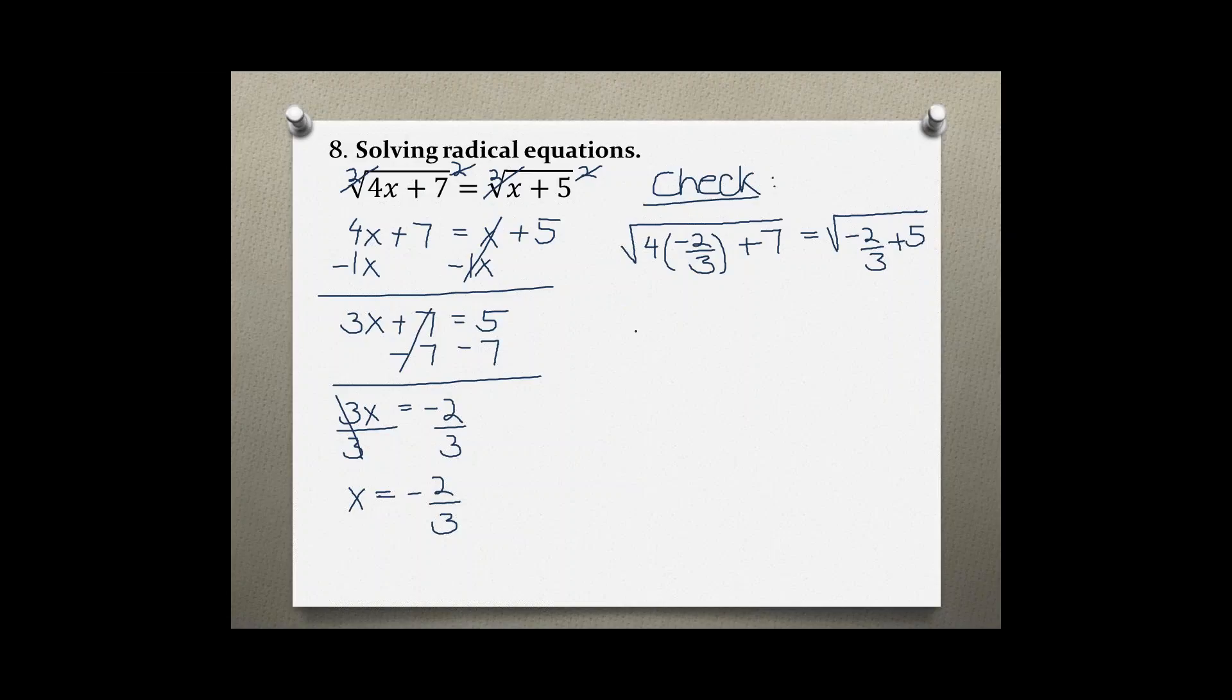Multiplying on the left 4 times negative 2 over 3, we can make that a fraction as well so we just straight multiply we get negative 8 over 3 plus 7. On the right side I'm just going to bring it down and do the same step on both.